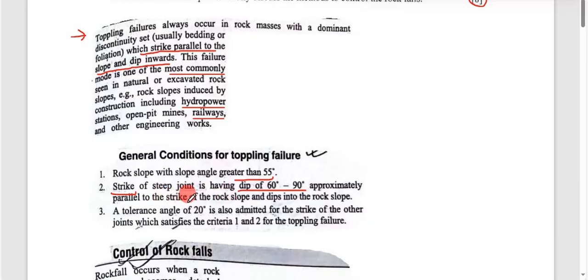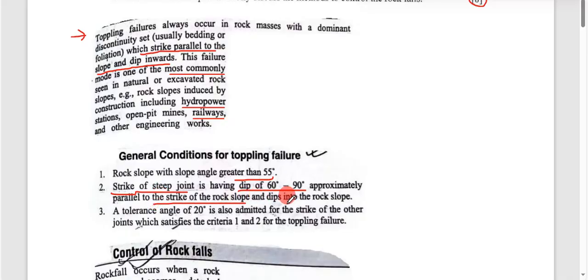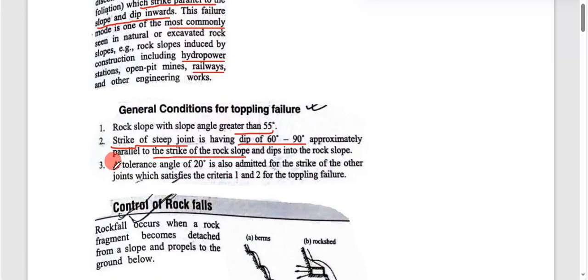The strike of the stiff joint is approximately parallel to the strike of the rock slope and dips into the rock slope. Number three, tolerance angle of 20 degrees.